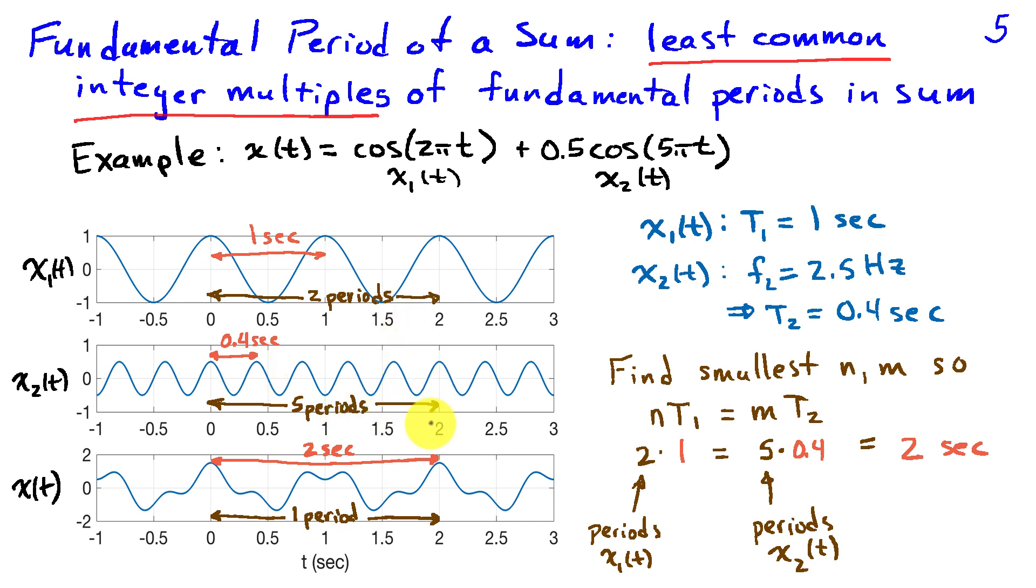But again that's not the fundamental period. But when I add these two signals the fundamental period ends up to be two seconds. It's equal to this least common multiple. So when I add the signals I'm finding the smallest period of the first signal and the smallest period of the second signal so that those two signals have equivalent periods.